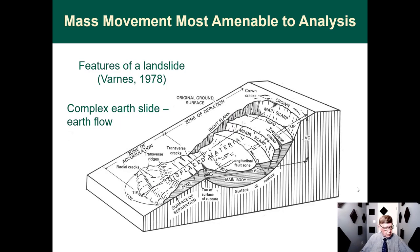Varnes also gave us a typical circular arc slip surface and the various components that go along with mass movement, from the crown or scarp right down to the toe of the slope. This is the type of slip surface and sliding mass we usually assume in slope stability analysis. We take one slice through the middle — the deepest part of the sliding mass — as the earth mass to consider in our analysis.